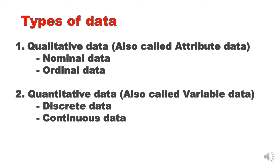For qualitative data, there are two types: nominal data and ordinal data. For quantitative data, there are also two types: discrete data and continuous data.